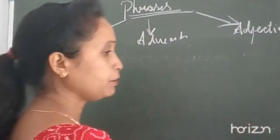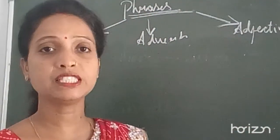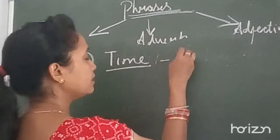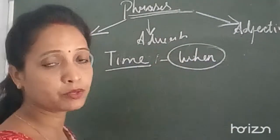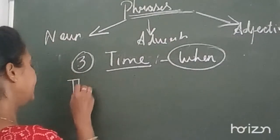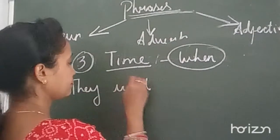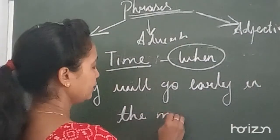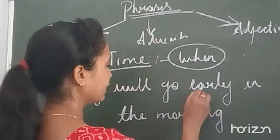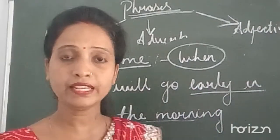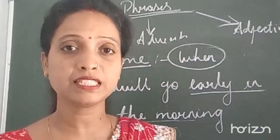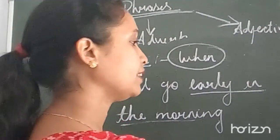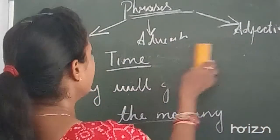Adverb of time aapko batata hai when the action took place — it gives you the answer of 'when' in the sentence. For example: they will go early in the morning — 'early in the morning' tells you when they will be going. So 'early in the morning' is the adverb of time.